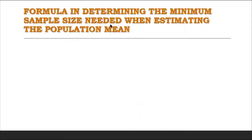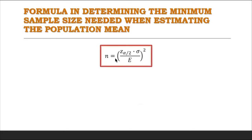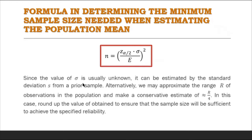The formula in determining the minimum sample size needed when estimating the population mean is n equals the square of z sub alpha over 2 times sigma, all over E. Since the value of sigma is usually unknown, it can be estimated by the standard deviation s from a prior sample. Alternatively, we can approximate sigma using the range R of the observations, making a conservative estimate of approximately R over 4. Round up the obtained value to ensure the sample size will be sufficient to achieve the specified reliability.